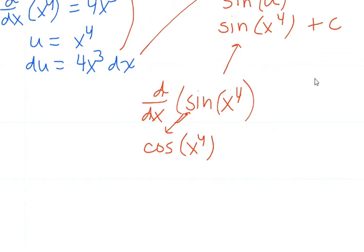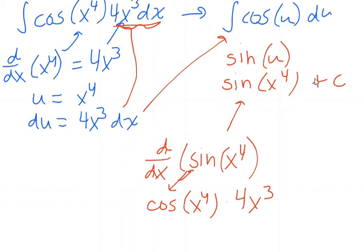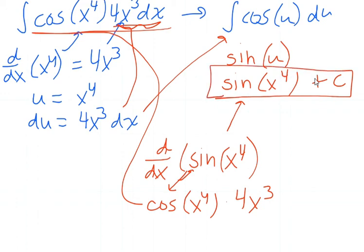And now we multiply it by the derivative of the inside function. And the derivative of x to the fourth, of course, is just 4x cubed. What do you know? That is exactly the integrand we were looking at up above. So yep, sine x to the fourth plus c is our answer. Thanks for watching. I hope you found this helpful, and we'll go through a couple of more examples next time.